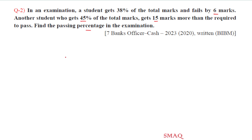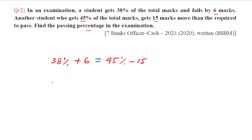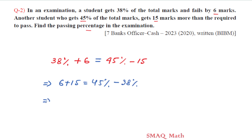The passing marks equals 38 percent plus 6. Also, the passing marks equals 45 percent minus 15. So 6 plus 15 is 21 marks, which equals 45 minus 38, that is 7 percent. So 21 marks equals 7 percent.